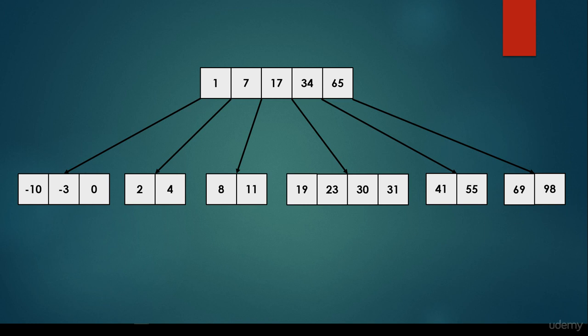So let's suppose we have a root node with 5 items or 5 keys and we have 6 children, and we would like to search for items or keys in this B-tree. So for example, let's search for 19.